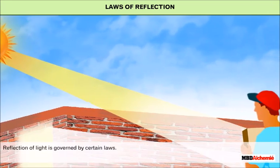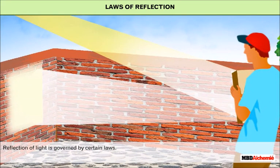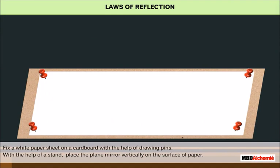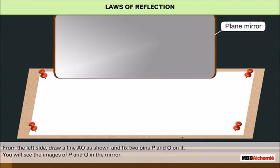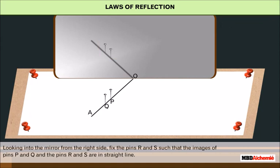Laws of Reflection. Reflection of light is governed by certain laws. Let us perform an activity to understand the laws of reflection. Fix a white paper sheet on a cardboard with the help of drawing pins. With the help of a stand, place the plane mirror vertically on the surface of paper. From the left side, draw a line AO and fix two pins P and Q on it. You will see the images of P and Q in the mirror. Looking into the mirror from the right side, fix the pins R and S such that the images of pins P and Q and the pins R and S are in a straight line.